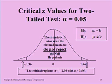The critical z-value for a two-tailed test when alpha is 0.05 is 1.96. I would reject the null hypothesis if the z-value were less than negative 1.96 or if the z-value were greater than positive 1.96.